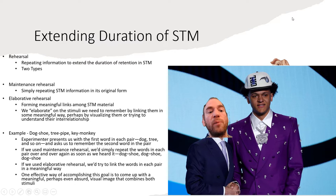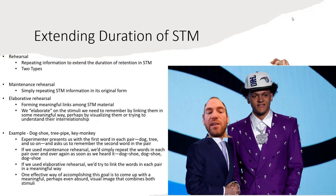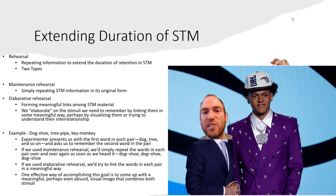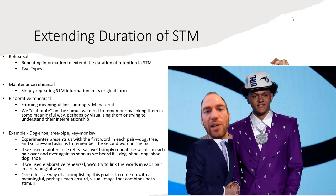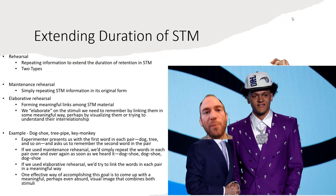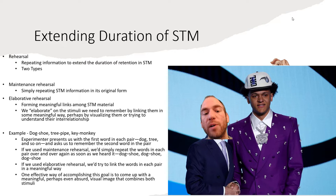You can extend the duration of short-term memory through rehearsal — repeating information to extend its retention. There are two types. Maintenance rehearsal is simply repeating short-term memory information in its original form, like repeating a telephone number over and over in your head, hoping to extend it long enough to eventually reach long-term memory. Elaborative rehearsal involves forming meaningful links between short-term memory material — elaborating on stimuli by visualizing them or understanding their interrelationships.